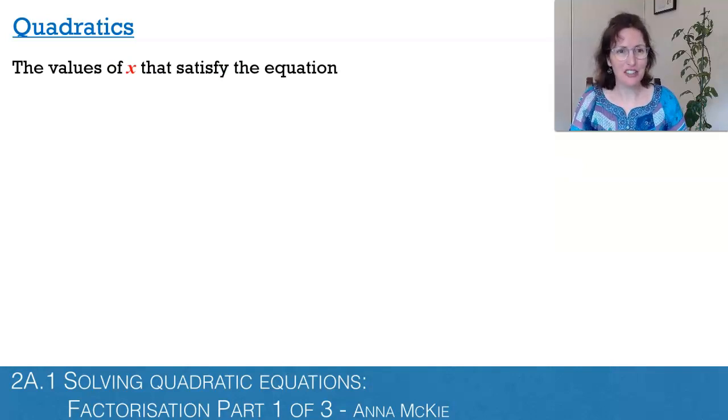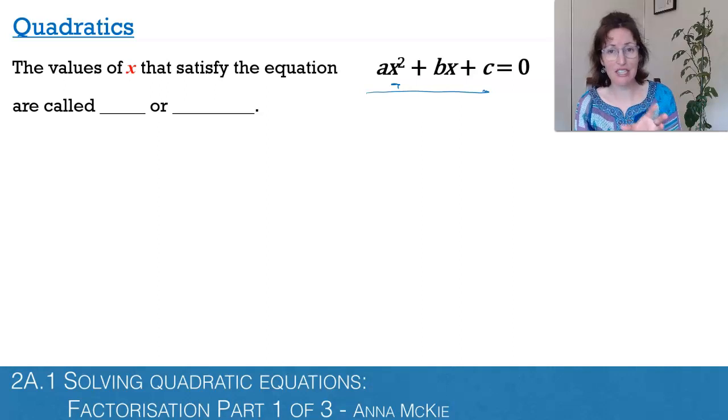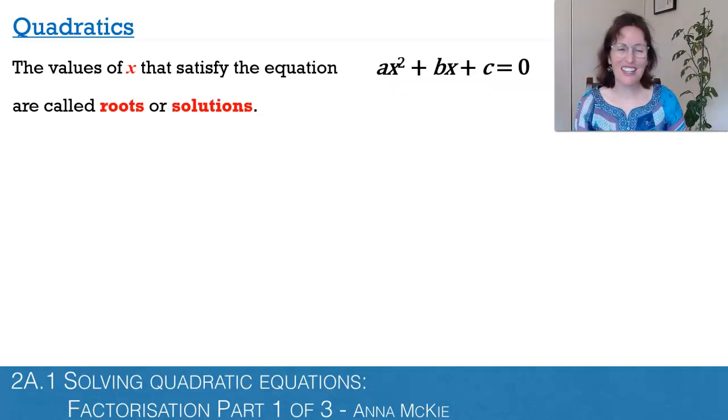Just a bit of a refresher first. So the values of x that satisfy an equation like this, what are they called? We're saying what is the name of the value you could substitute in here for x so that this whole left-hand side equals the right-hand side equals zero? They'd be called the roots or the solutions to that equation.